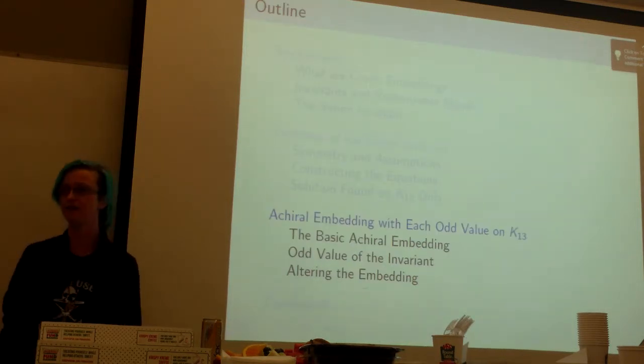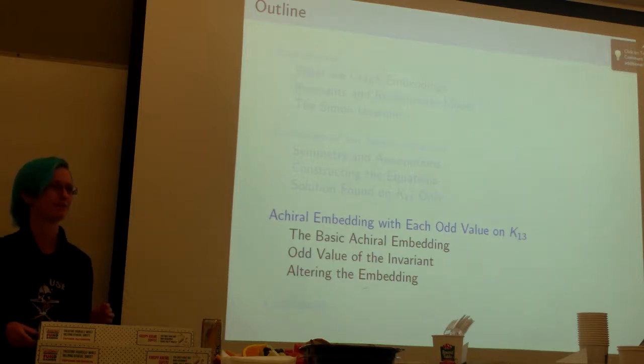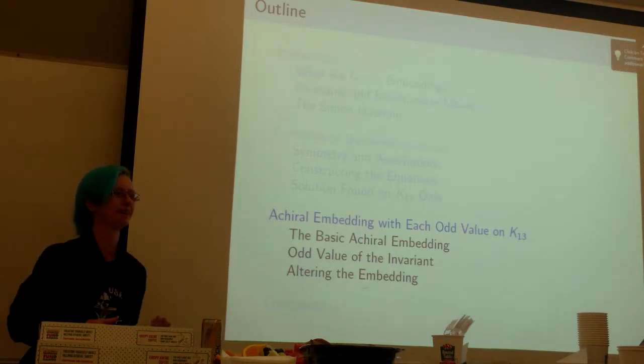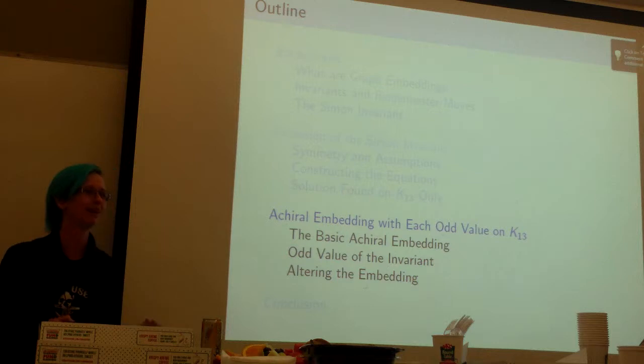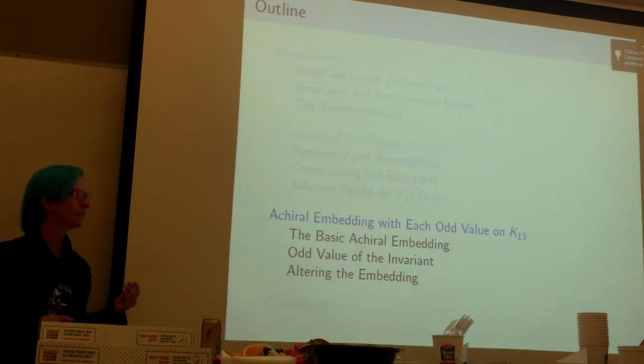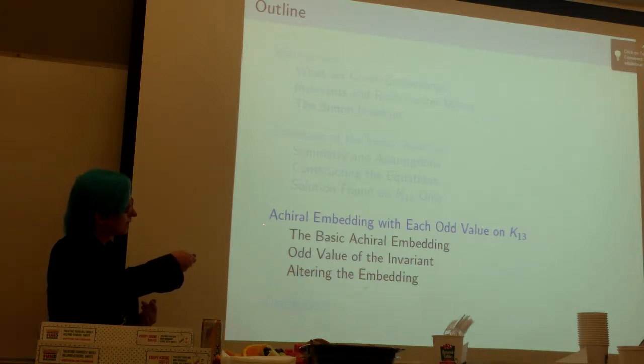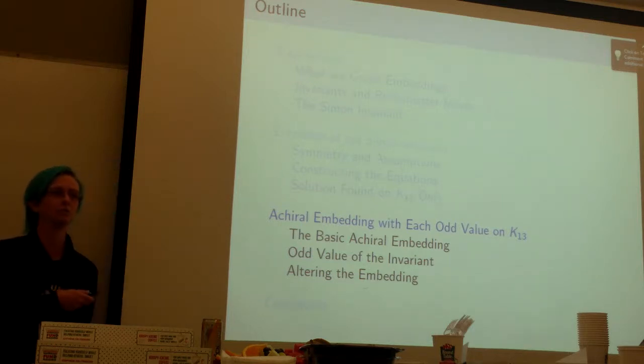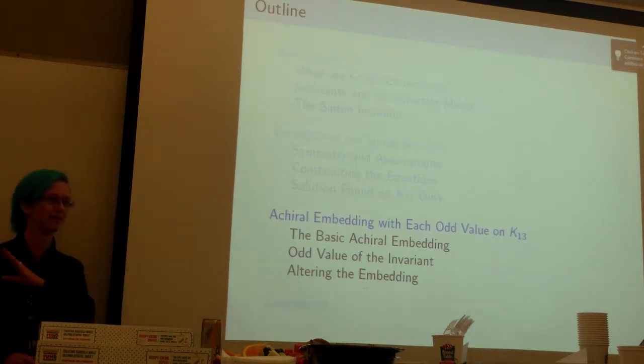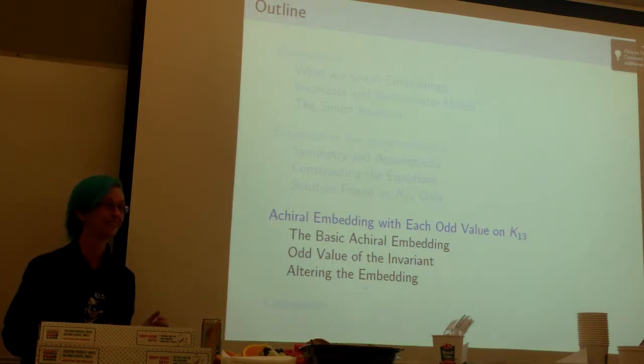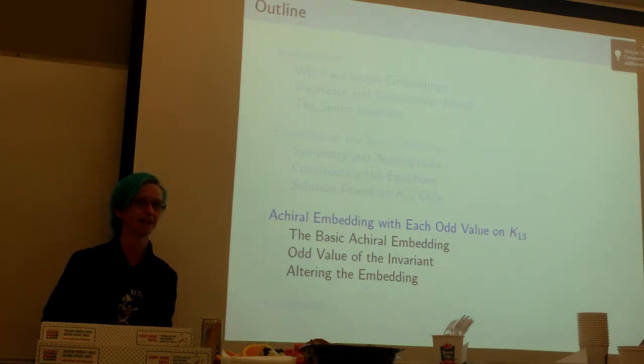Now that we have an invariant, this was an idea that was sent to me by Dr. Flapan over at Pomona College, which is you can use these to show things about the chirality of the various graphs. So let's see, K13 has an achiral embedding. Can we make one with every possible odd number as the value of this extended Simon invariant? So I guess we can.